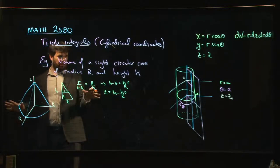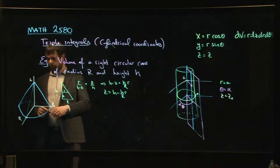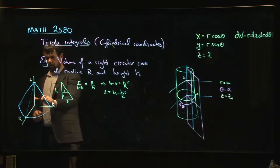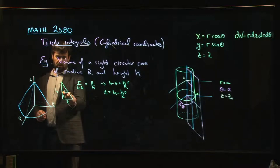First of all, we want to set this up as a cylindrical coordinate integral, so we need Z as a function of R. What we're doing here is saying, if you're at a certain height Z, what is the radius going out from the Z axis to the cone?